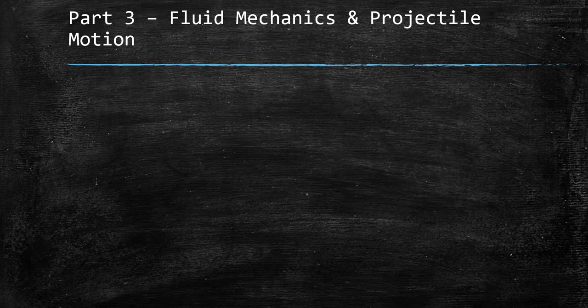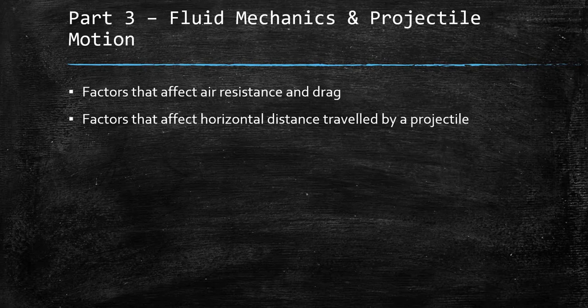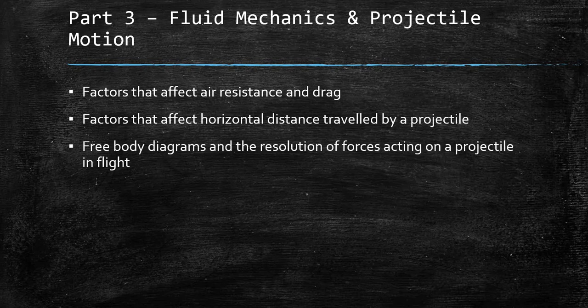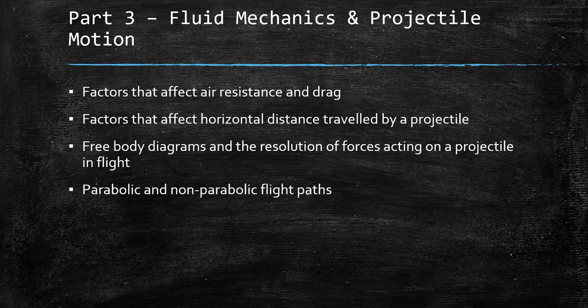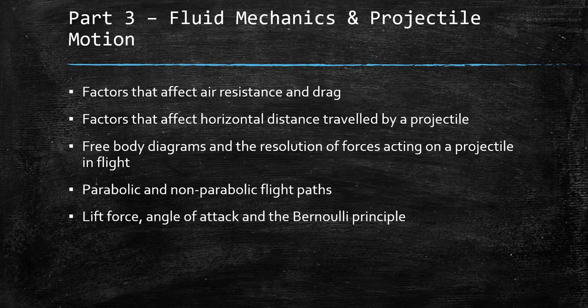This is our final bit of learning we need to know in year 12 — we're nearly at the end of the unit. Over the next three videos, we're going to look at factors that affect air resistance and drag, factors that affect horizontal distance travelled by a projectile, free body diagrams and resolution of forces acting on a projectile in flight, parabolic and non-parabolic flight paths, lift force, angle of attack and the Bernoulli principle, and finally spin and the Magnus effect.